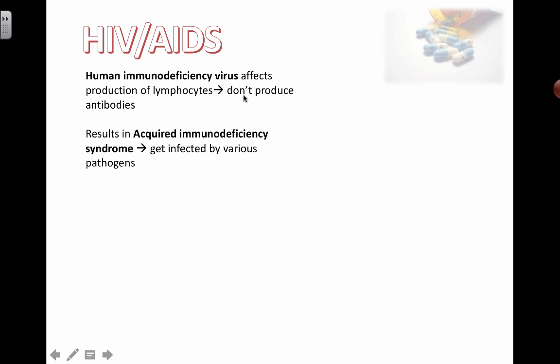This virus actually affects the production of lymphocytes, which are a type of white blood cell. Once these lymphocytes get attacked, it messes with the chain of secondary immune defense and ends up affecting a type of cell called helper T cells. That prevents your body from being able to produce antibodies — the proteins that attach to antigens on pathogens that have invaded your body — so you won't be able to fight them effectively.